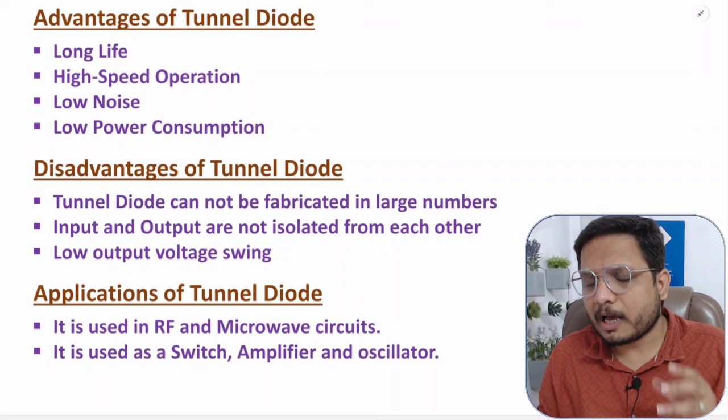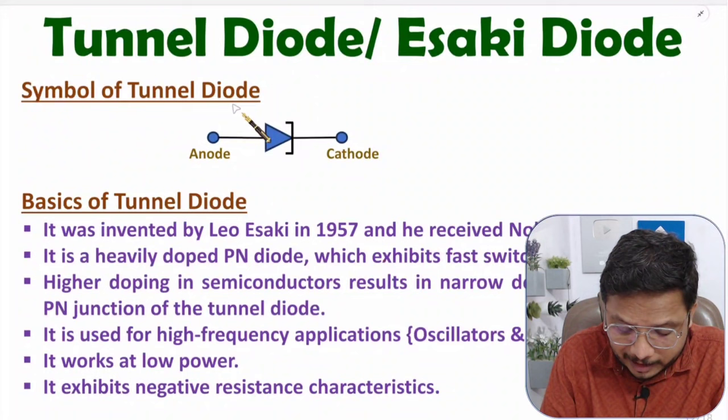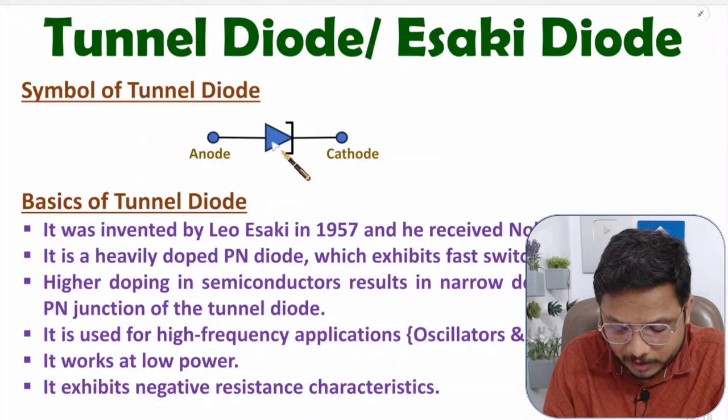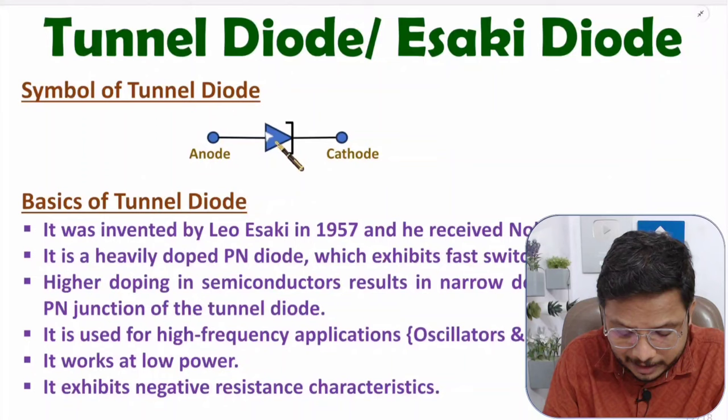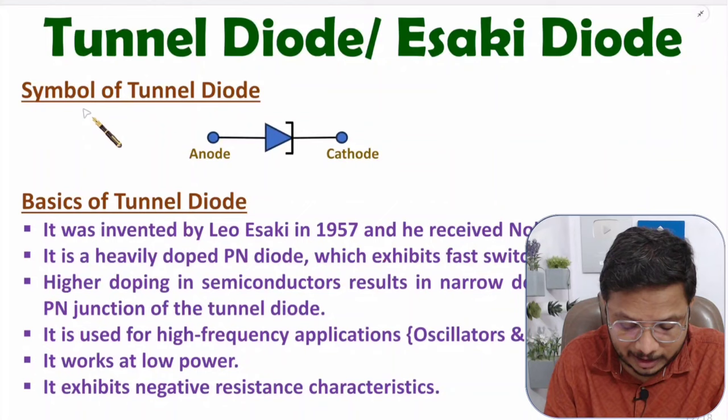Let us first understand the symbol of tunnel diode. The symbol of tunnel diode is similar to the normal PN junction diode symbol with one difference — at the cathode side we don't have a straight line; instead, in tunnel diode the line is bent. This is the basic symbol of tunnel diode.